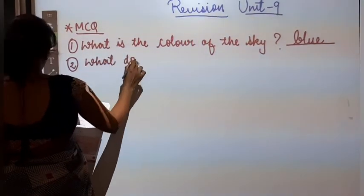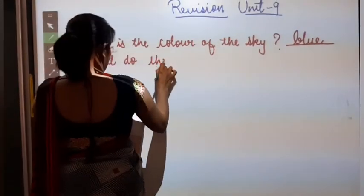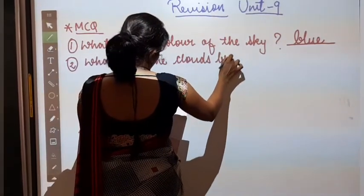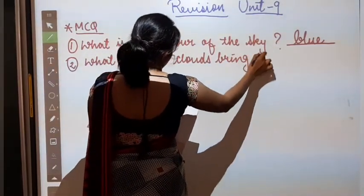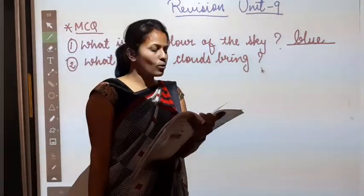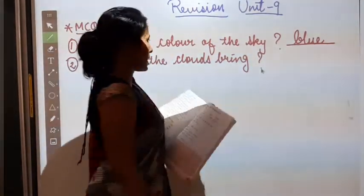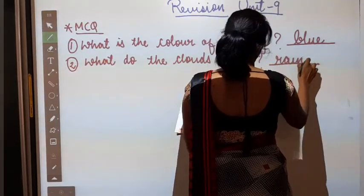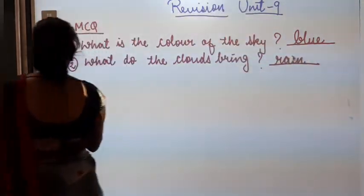What do these clouds bring? What are the colors of the sky? Options are light, cold, heat or rain. So answer will be rain. Number 3.